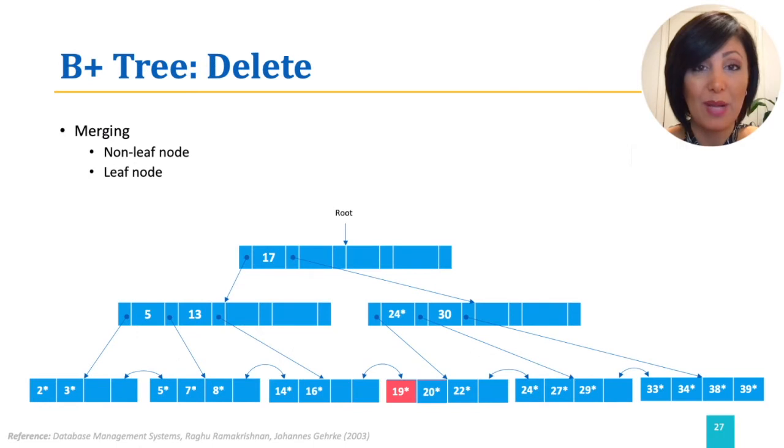Consider our previous example after the INSERT operation, and say we want to delete entry 19. Delete of this entry is only done by finding it and removing it from the leaf.